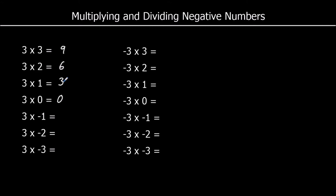So 3 times negative 1 — 3 lots of negative 1 — is negative 3. And 3 lots of negative 2 is negative 6. 3 lots of negative 3 is negative 9.